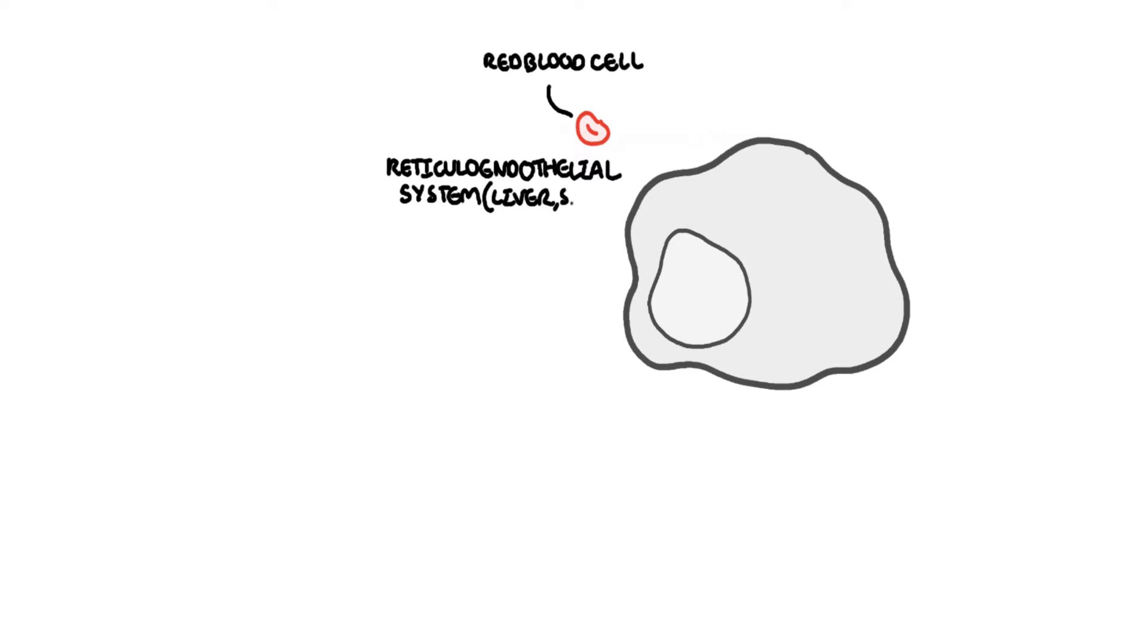Here they are engulfed by macrophages. The red blood cells contain many hemoglobin molecules normally, which are broken down to heme and globin, hence the name hemoglobin. Heme is further broken down.